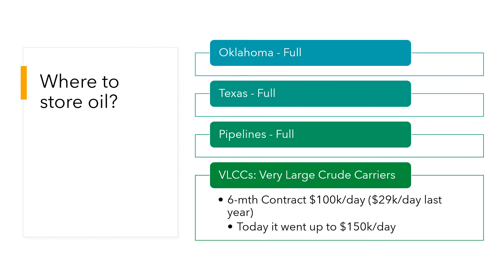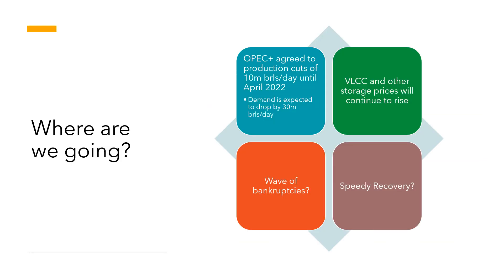We also have something called VLCCs — Very Large Crude Carriers — which are massive ships where you can rent six-month contracts to store up to 2 million barrels of oil. The average rate last year was $29,000 per day; the six-month contract average was around $100,000 per day. Today the spot rate jumped to $150,000 per day — effectively five times last year's average. The cost of storing oil on these ships has surged dramatically.